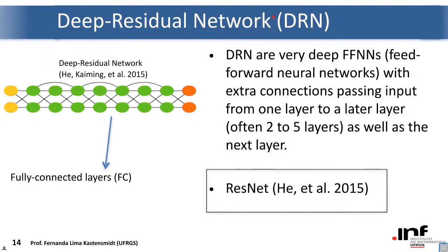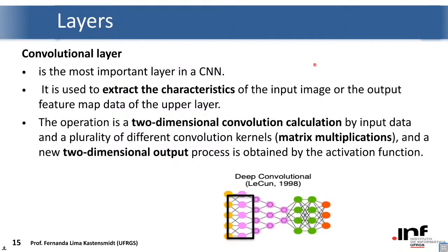Deep residual networks are very deep feed-forward networks with extra connections between layers — ResNet is a well-known example using this topology. Looking at the layers: the convolutional layer extracts image characteristics based on two-dimensional convolution, involving a large amount of matrix multiplication and addition, with a two-dimensional output. The pooling layer reduces the feature map, reducing complexity and helping with overfitting. The fully connected layer, placed at the end when present, is based on multiplications, accumulation, and the activation function, giving a one-dimensional output.